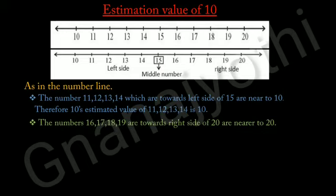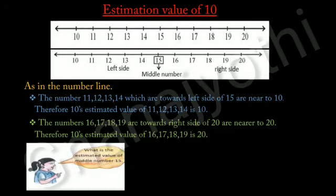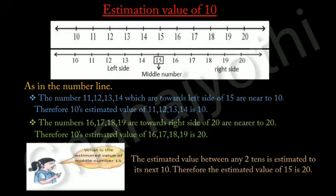The numbers 16, 17, 18, 19 are towards the right side and are nearer to 20. Therefore, the 10's estimated value of 16, 17, 18, 19 is 20. Then, what is the estimated value of the middle number 15? The estimated value between any two 10s is estimated to its next 10. Therefore, the estimated value of 15 is 20.